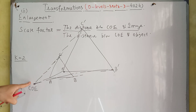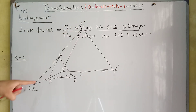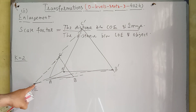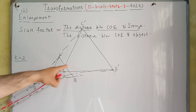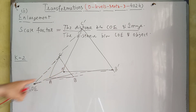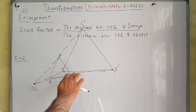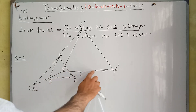One important rule in case of enlargement: the center of enlargement, object point, and image point must be collinear — meaning all three points lie on a straight line. Similarly, center of enlargement, object B, and image B-dash all lie on a straight line.